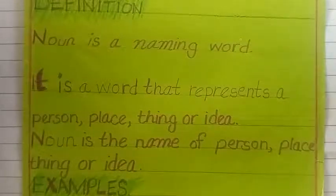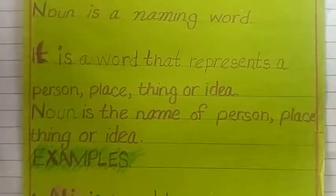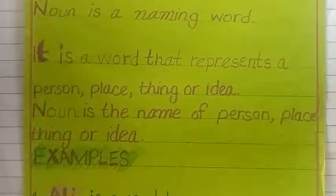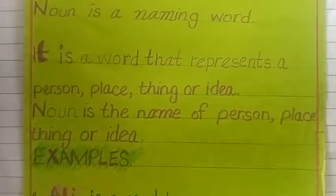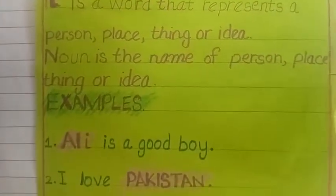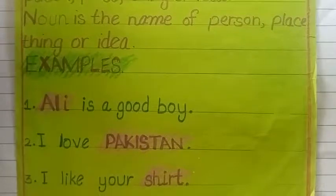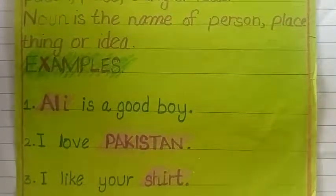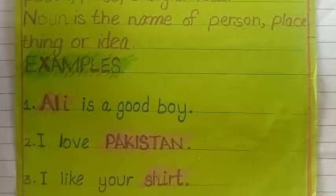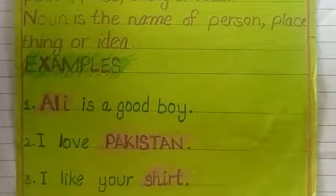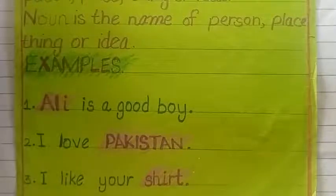One more definition: noun is a name of a person, place, thing, or idea. These are very easy definitions of noun. Noun is a naming word. Everything has a name in the world, so this is a noun. Let's move to the examples. 'Ali is a good boy.' In this sentence there are two nouns. Ali is a noun. What is the other noun in this sentence? 'I love Pakistan.' Pakistan is a name of a place. 'I like your shirt.' Shirt is a name of a thing. So these are nouns. Hope you understand the definition of noun.